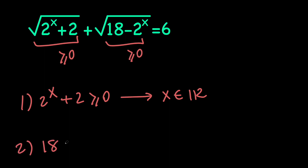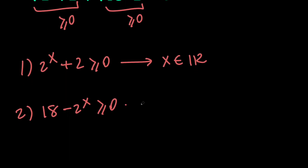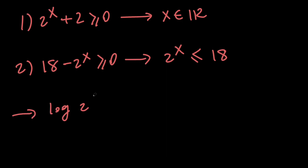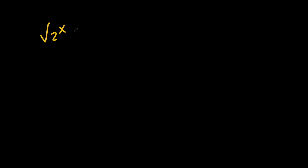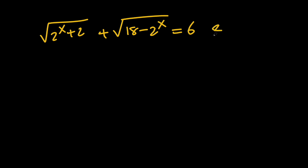Secondly, we want 18 minus 2 to the x to be non-negative, so 2 to the x must be less than or equal to 18. Taking the log base 2 of both sides gives us x less than or equal to log base 2 of 18. This is the main restriction on x. Now let's rewrite the problem: square root of (2 to the x plus 2) plus square root of (18 minus 2 to the x) equals 6, with x ≤ log₂(18).